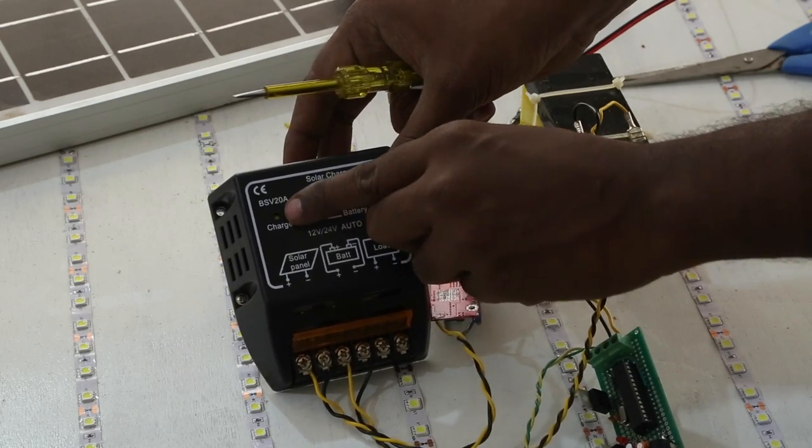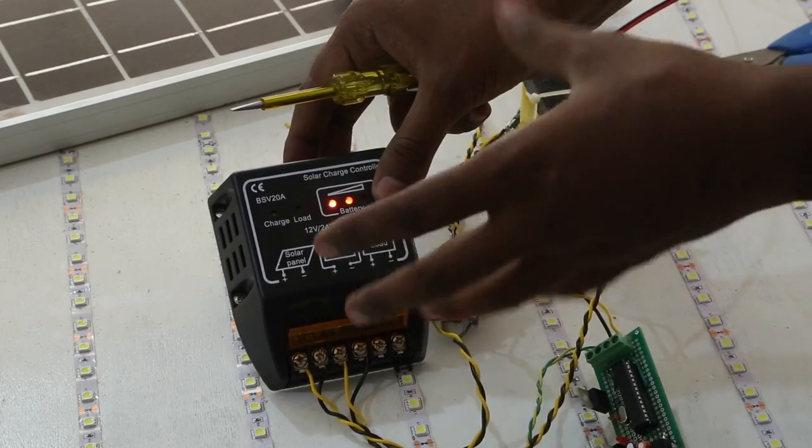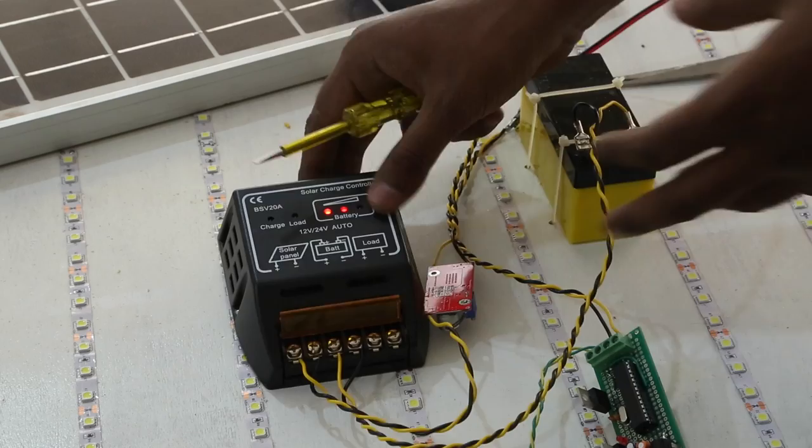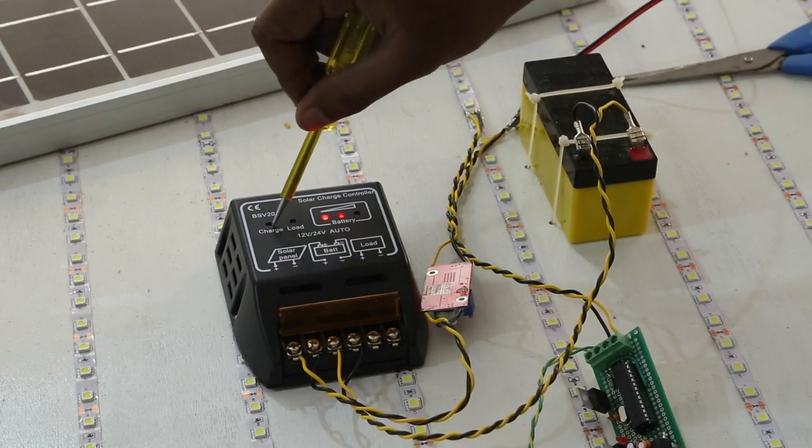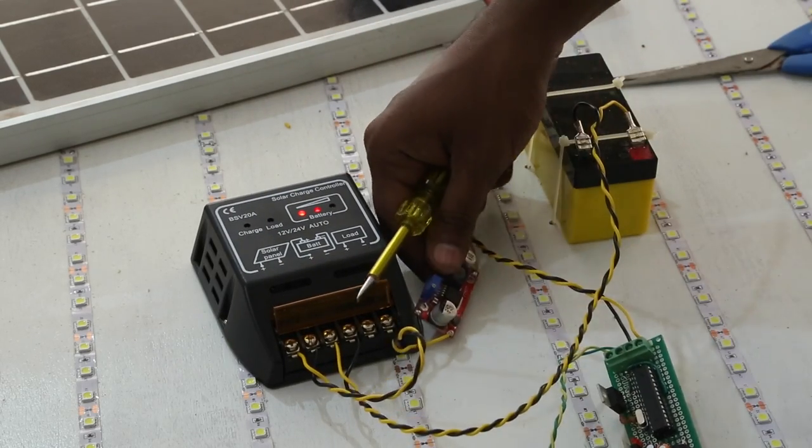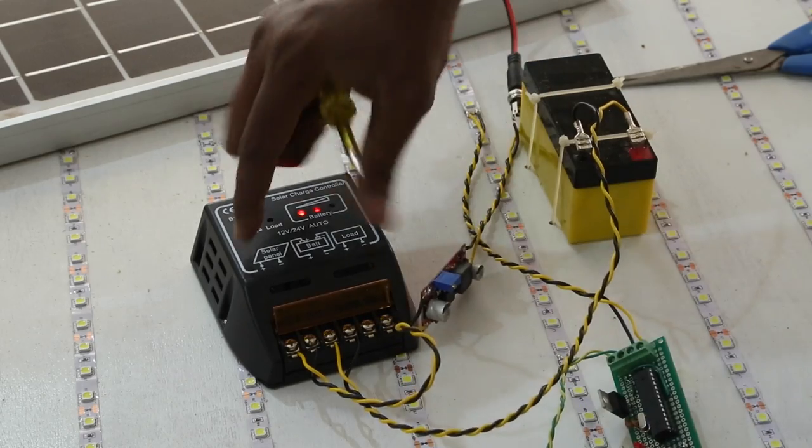Right now, the charge LED is lighting up very dim because we're indoors. But it's lighting up, which means there's voltage. I measured it—it's around 4 volts coming right now.